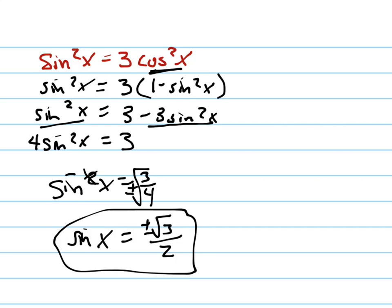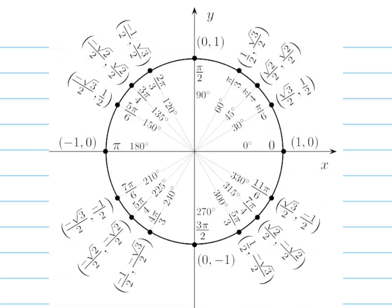And so we can look at our unit circle. So where is the sine plus or minus root of 3 over 2? Remember sine is the y-coordinate. So there, there, all of the 60-degree reference angles. There and there.